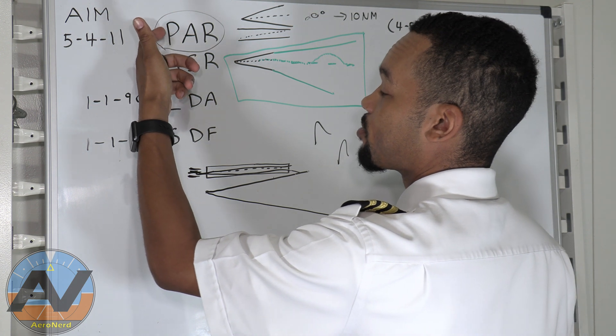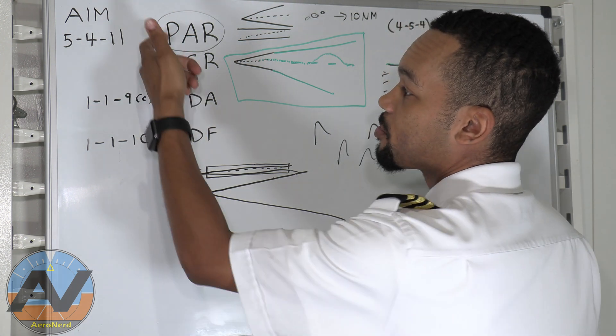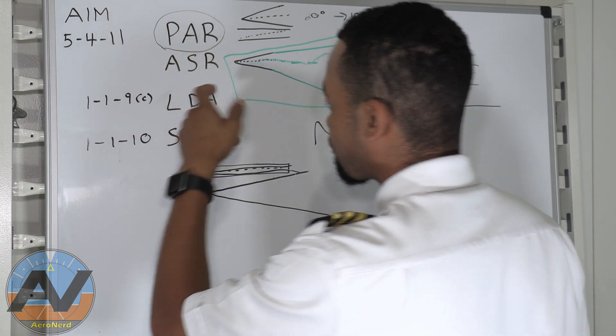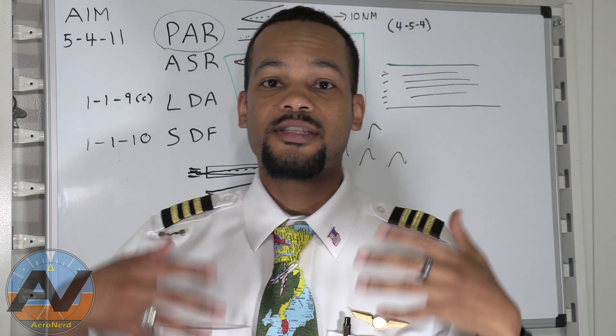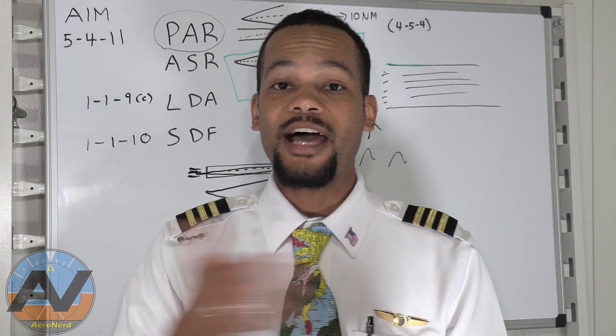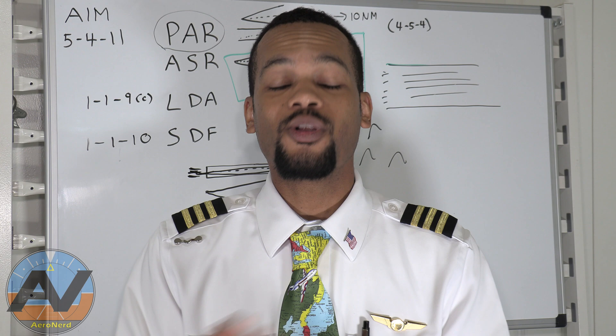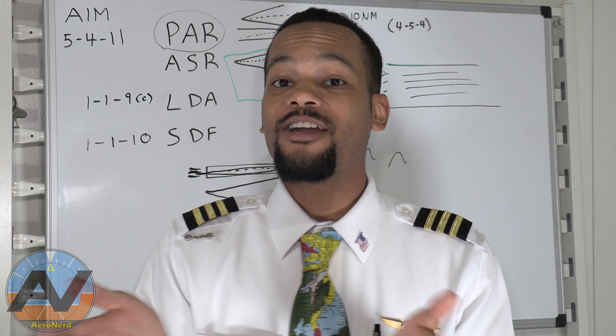The difference between precision approach radar and approach surveillance radar is precision approach, the controller will be able to give you lateral and vertical guidance. The approach surveillance radar, they will only be able to provide you lateral guidance.